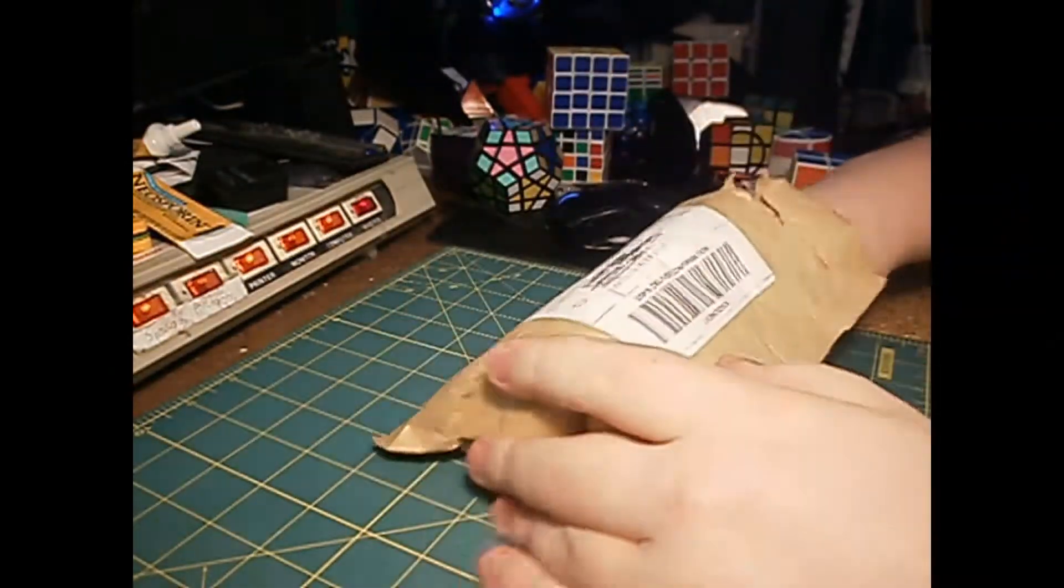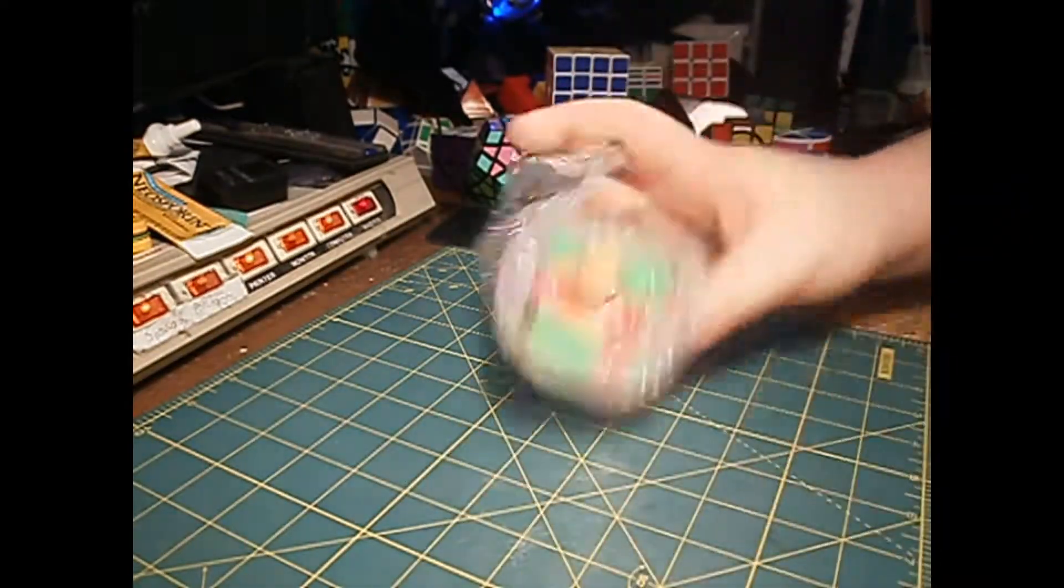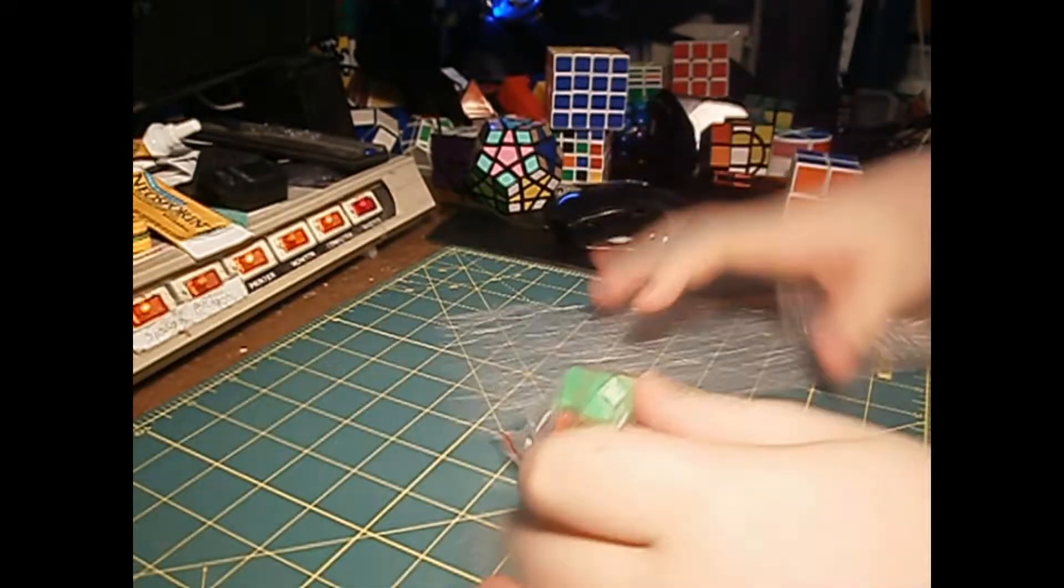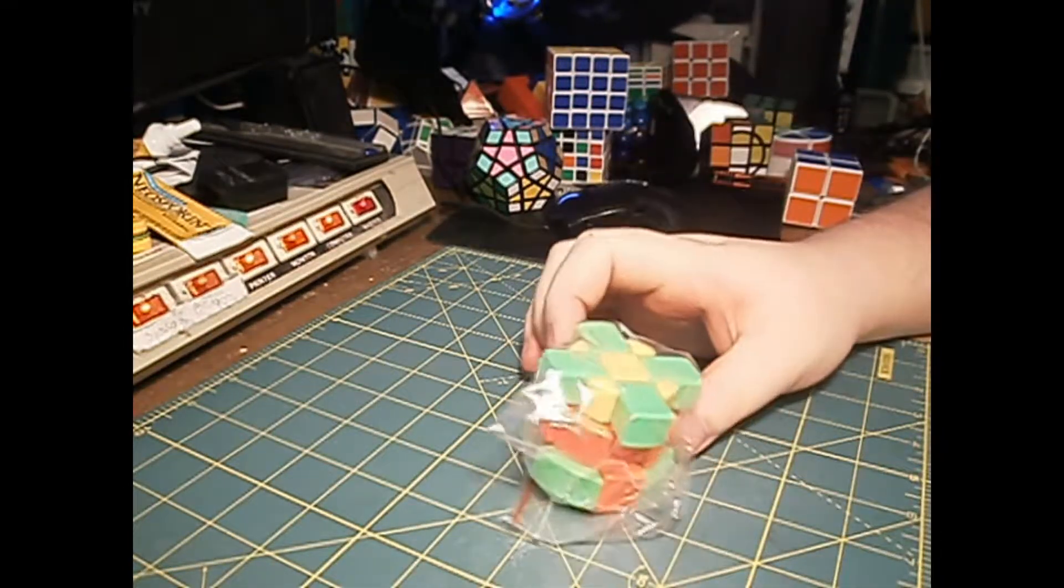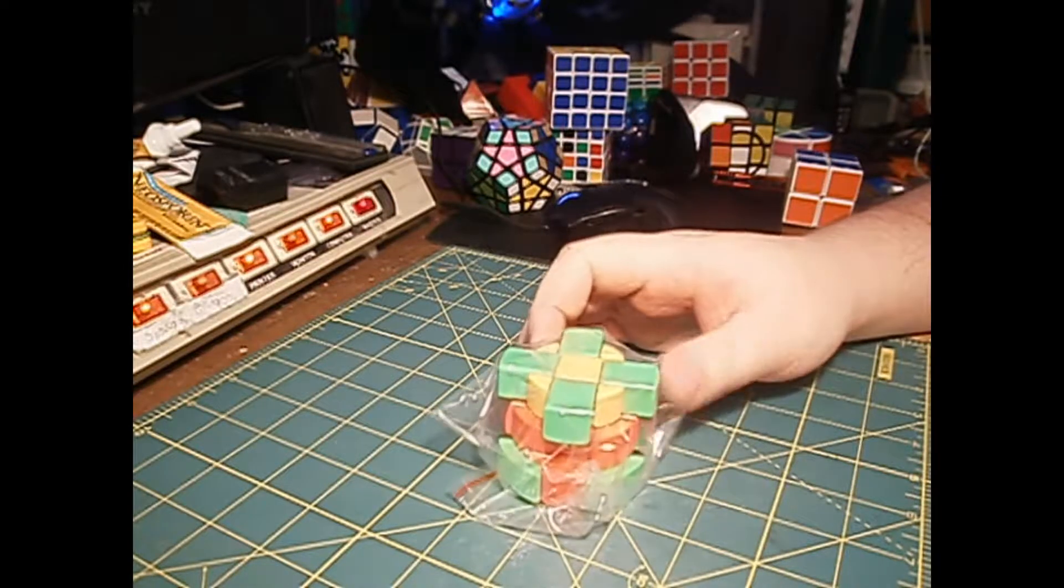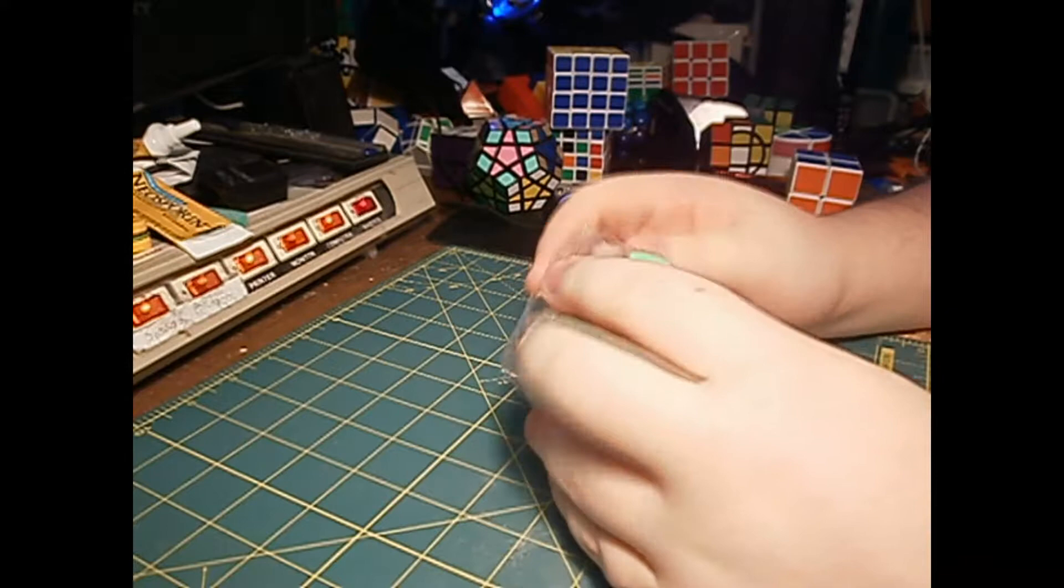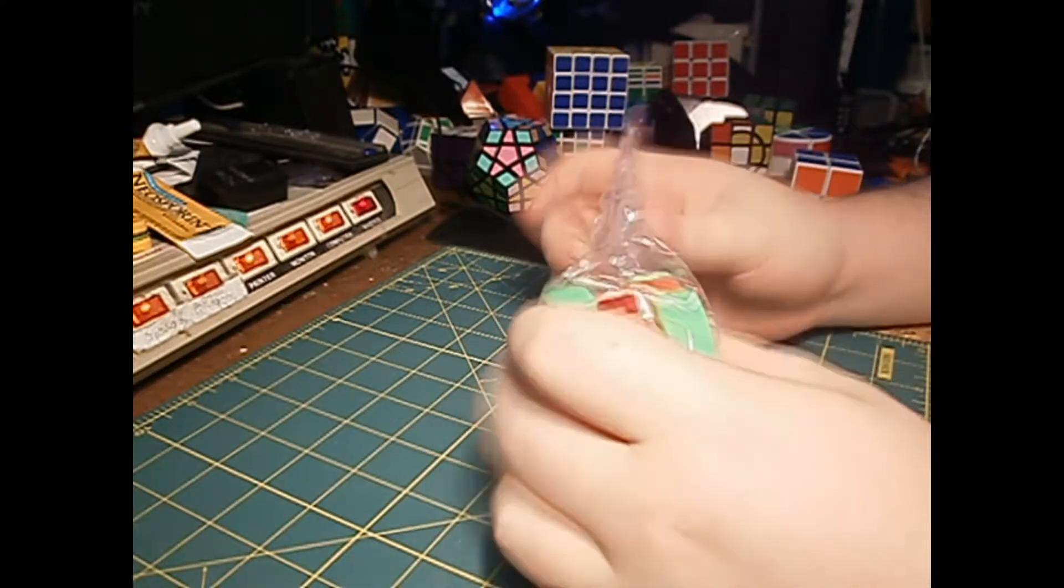So let's break it open. How they have this listed on eBay is it's called Rare Cute Tri-Color 3x3x3x3 Windmill Magic Cube Twist Puzzle Toy Brain Teaser.